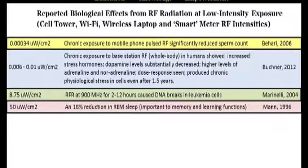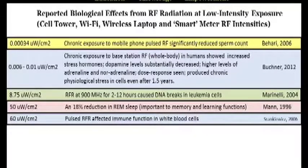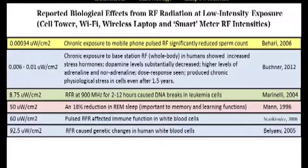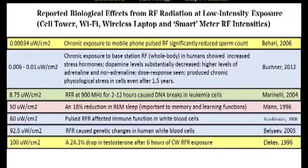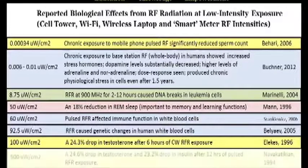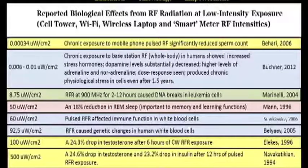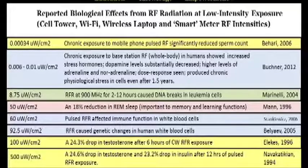At 50 microwatts, we see a decrease in REM sleep. At 60 microwatts, pulsed radio frequency radiation affects immune function in white blood cells. At 92.5 microwatts, we see genetic changes in human white blood cells. And for those concerned about testosterone levels, after just 6 hours of exposure at 100 microwatts, we see a 24.3% drop in testosterone. Another study shows that at 500 microwatts per centimeter squared — still only 50% of US and Canadian guidelines — we see a 24.6% drop in testosterone and a 23.2% drop in insulin after just 12 hours of pulsed radio frequency radiation exposure. The studies go on to show brain and neurological disorders, infertility, DNA damage, cardiovascular effects, decreased immune function, and cancer.